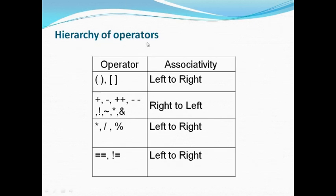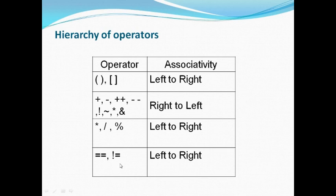In the hierarchy of operators, first preference goes to parentheses, then unary operators such as plus, minus, increment, decrement, not, followed by slash, star, and the address-of symbol. Next come star, slash, and modulo, then double equal to and not equal to. These are the operators in their hierarchical order.